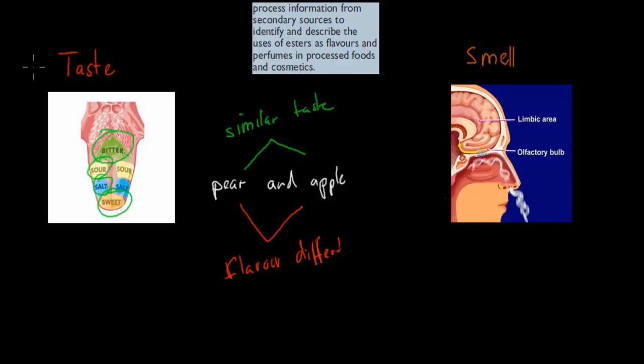I'll read the dot point. It says, process information from secondary sources to identify and describe the use of esters as flavors and perfumes in processed food and in cosmetics. So in this case, we should be talking about what flavor actually is, and how esters help us improve our flavor or change our flavor, and why we use esters in perfumes as well when it comes to cosmetics.